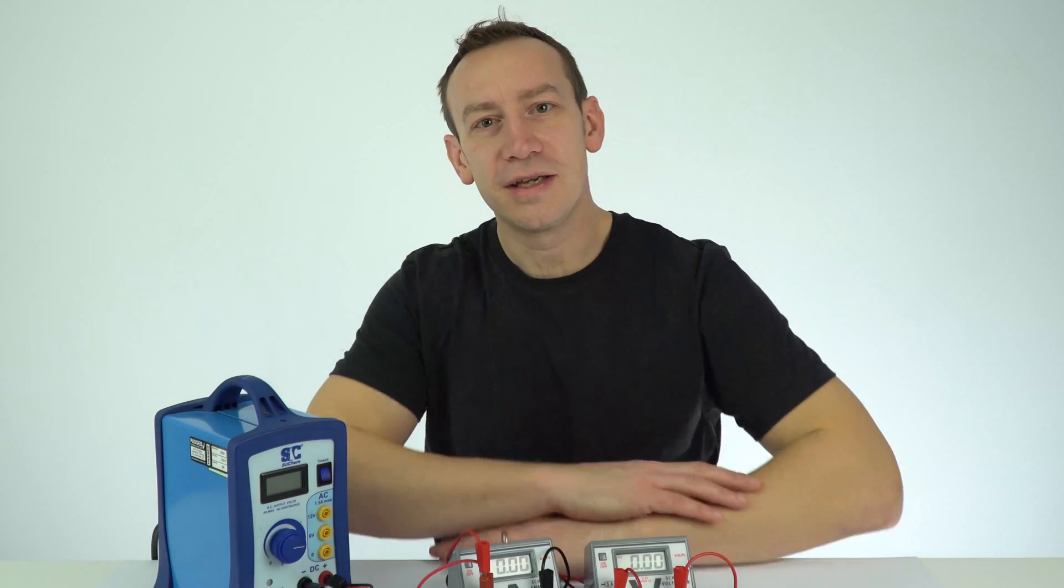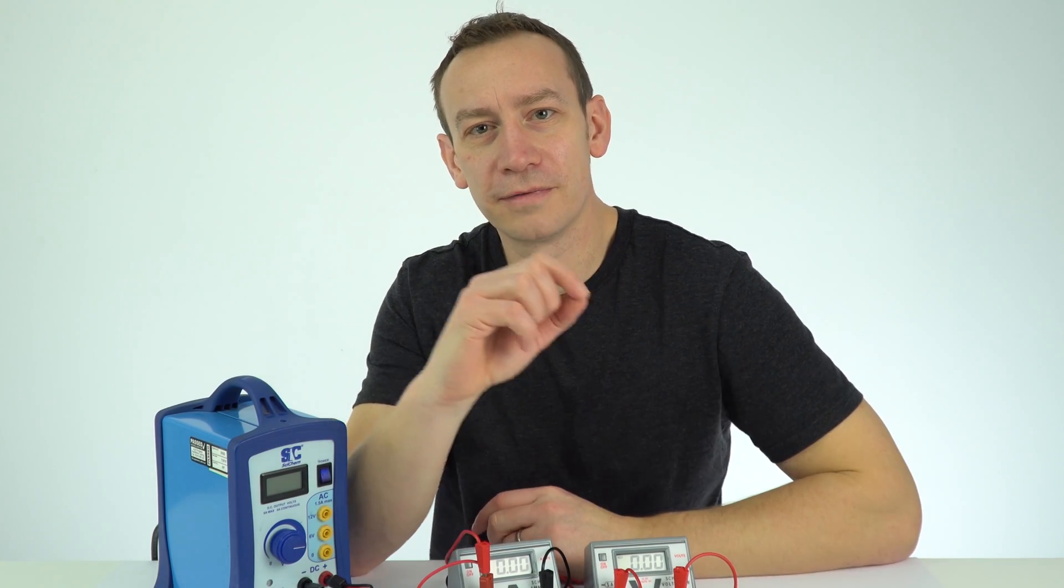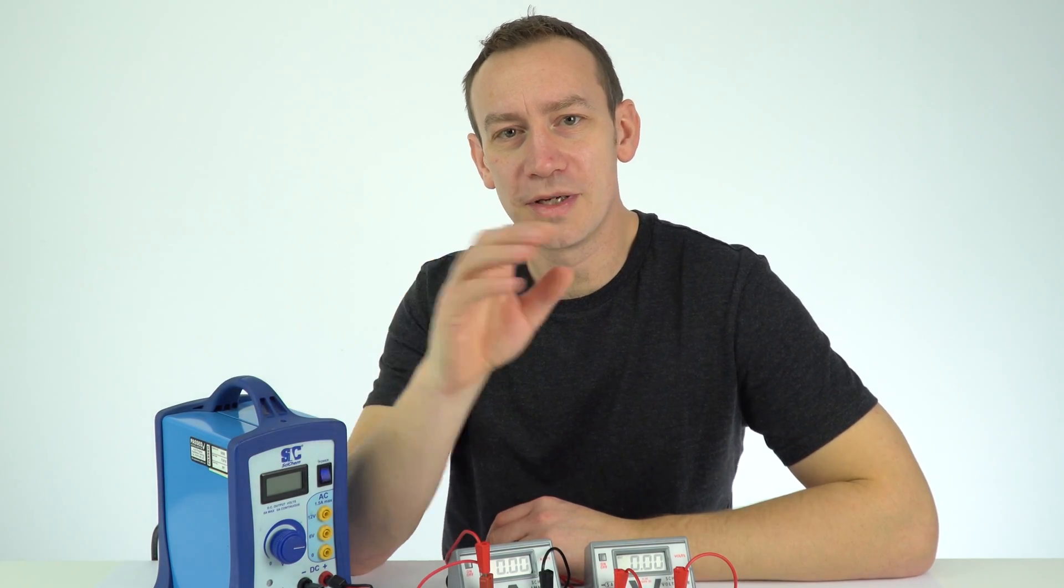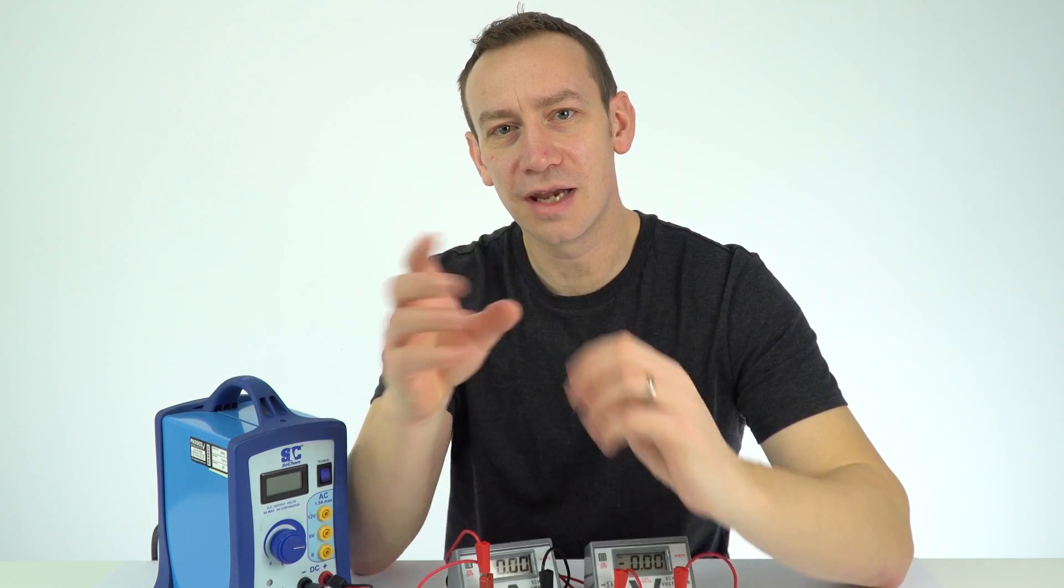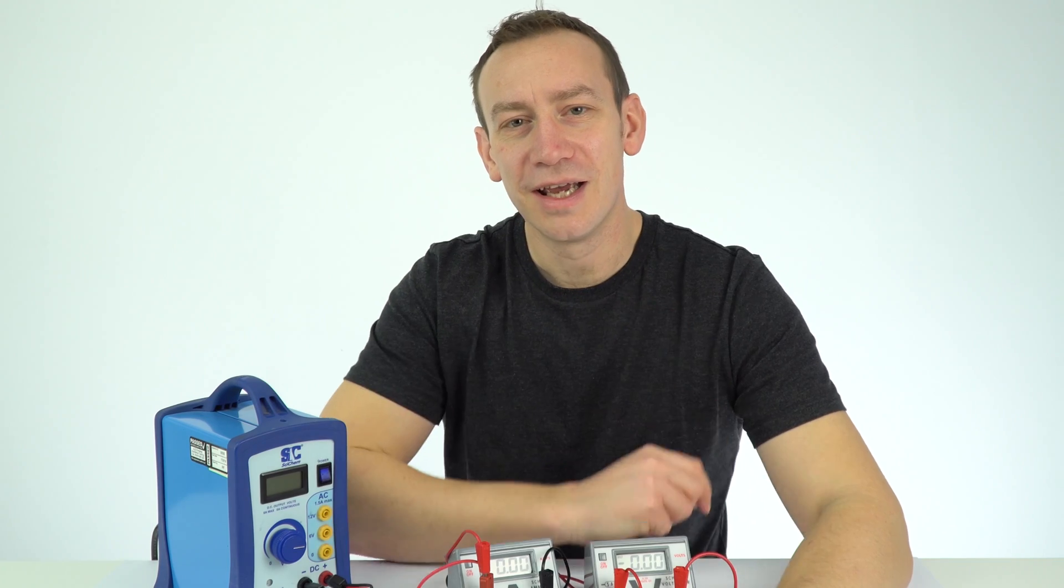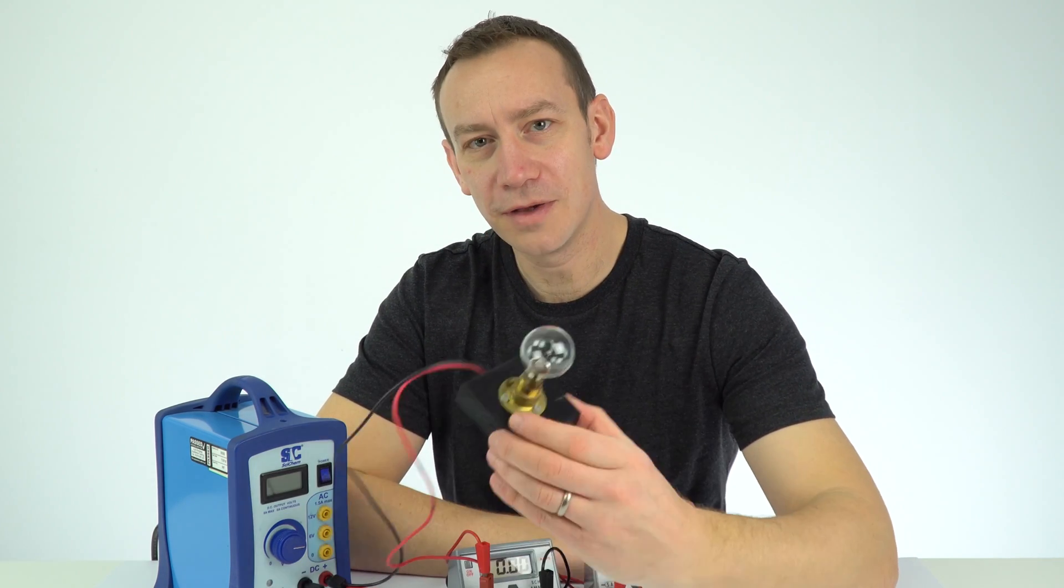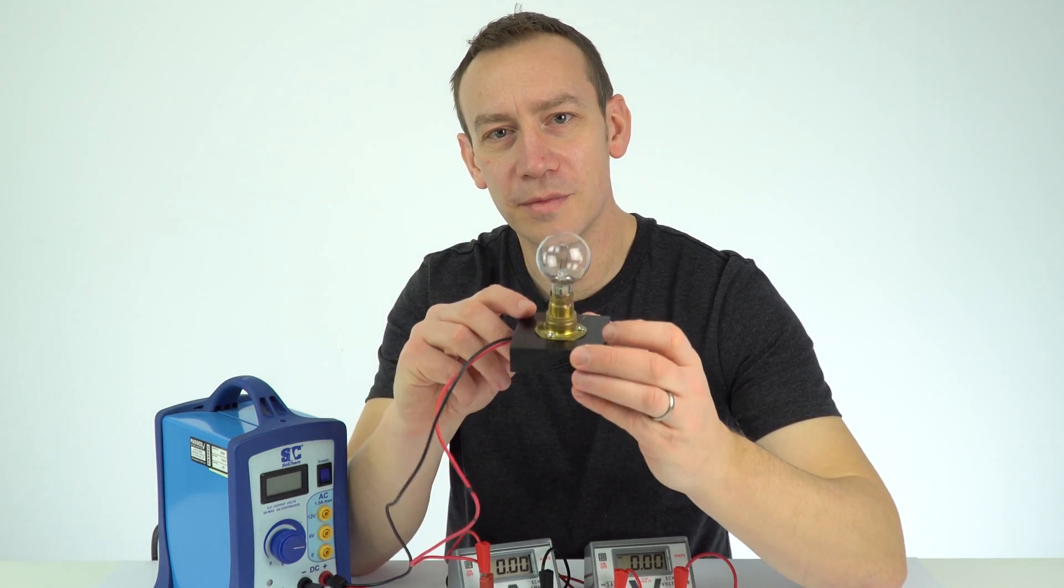So now you should have some data and we can then plot a graph where we have the voltage or potential difference on the x-axis and on the y-axis we have our current. And again, we're going to have both positive and negative values on this graph. We can then draw in our line of best fit. And then this then tells us about the IV characteristics of a filament lamp.